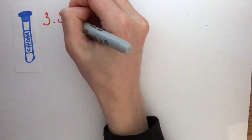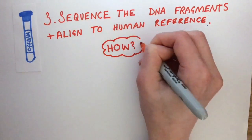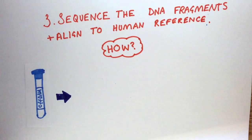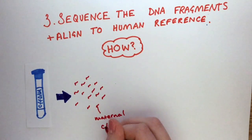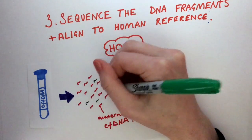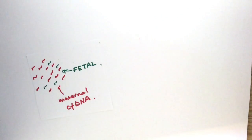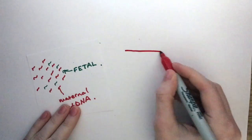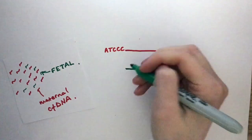Next, you sequence the DNA fragments and align them to a human reference. How would you do this? Well, that original sample that you have is a mix of maternal CF DNA and fetal CFF DNA. Each of these strands, no matter what the origin, is a DNA sequence. And the start of each sequence is what you call a read.